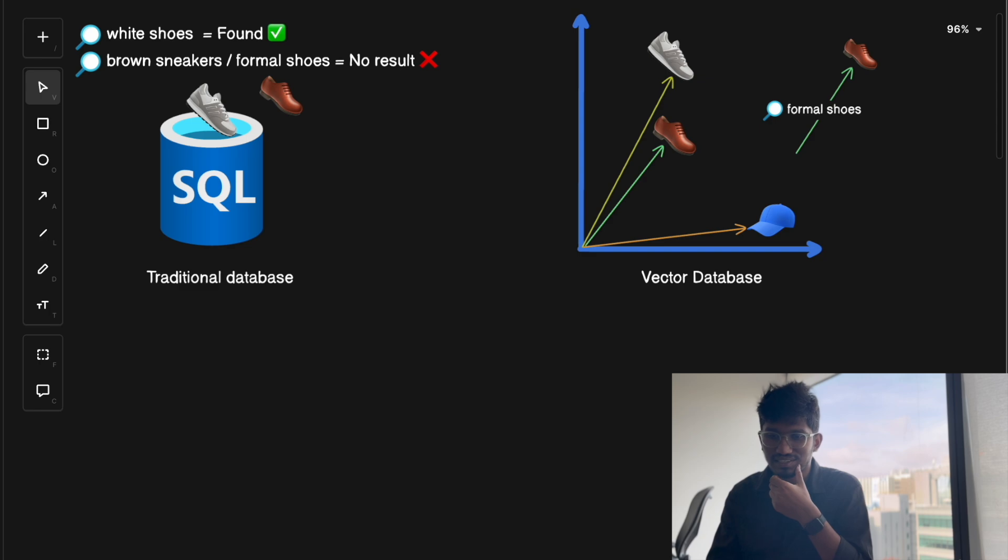That's where vector databases come into picture. Instead of searching for exact words or values, vector databases help us find things that are similar. They don't care about exact matches. They care about related or similar items. For example, in a vector database, even if we have only white shoes and a cap, but if the user searches for formal shoes or brown shoes, it will return the vector of white shoes in the search result. Why? Because the angle between these two vectors, the vector for the white shoe and the vector for the brown shoe, is quite less. So we conclude that this is similar to this. That's how vector databases help in finding similar matches, instead of just focusing on exact matches, which is the case in traditional databases.